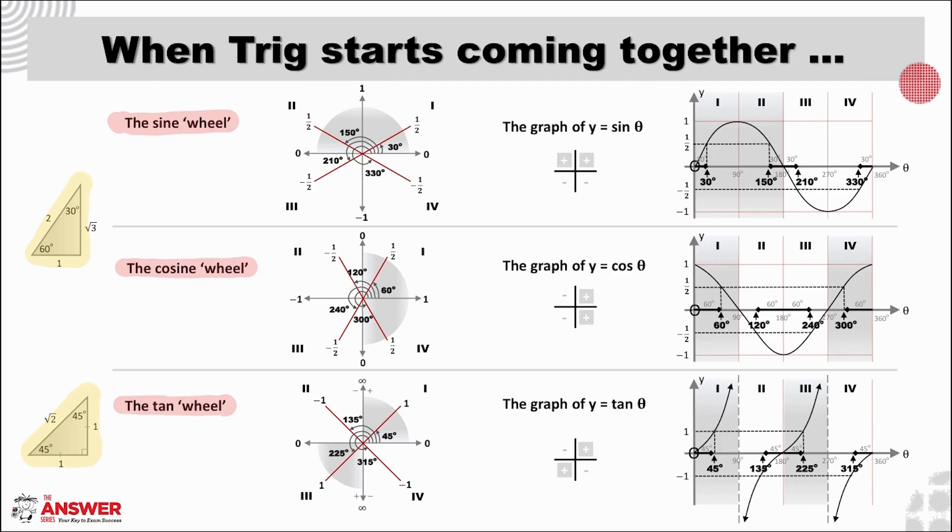You may have noticed that we've shaded the quads where the ratios are positive, and so for sin, we've shaded where y is positive. For cos, we've shaded where x is positive. And for tan, we've shaded where x and y have the same sign. This column also holds the unit circle outcomes. It is worth noting that both sin and tan of 0 degrees is 0. In other words, both these graphs start at the origin. Where for cos, cos of 0 degrees is 1.